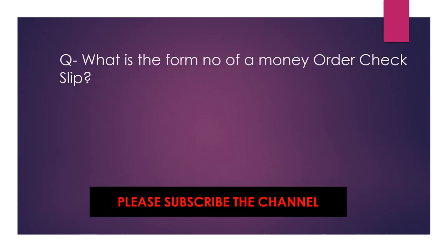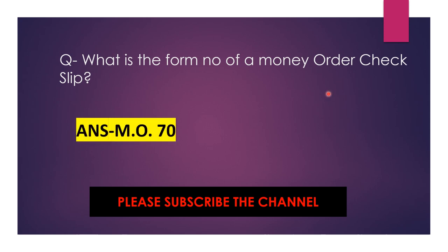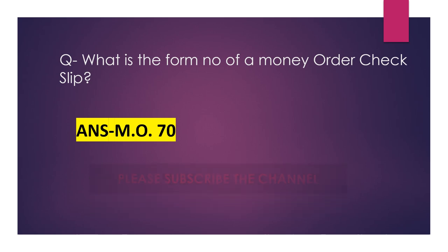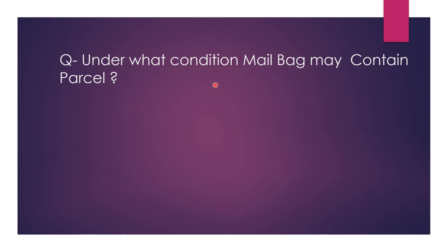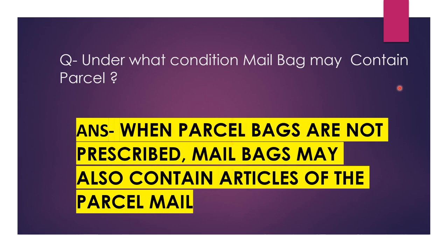Next question. What is the form number of a money order sex slip? The answer is MO70. Under what condition may a mail bag contain partial articles? The answer is when partial bags are not prescribed, mail bags may also contain articles of the partial mail.